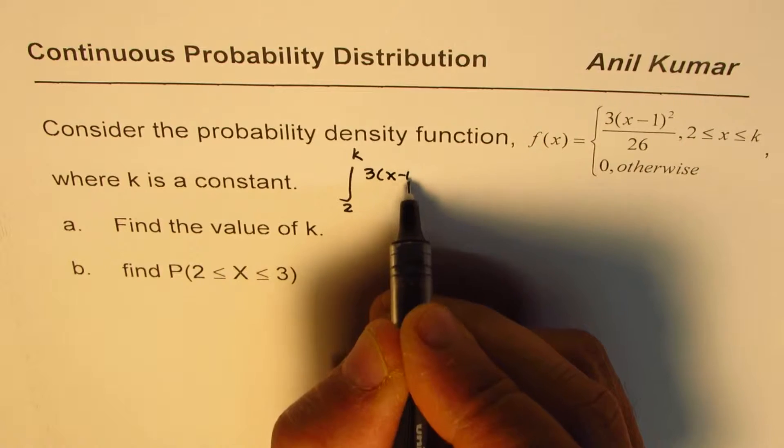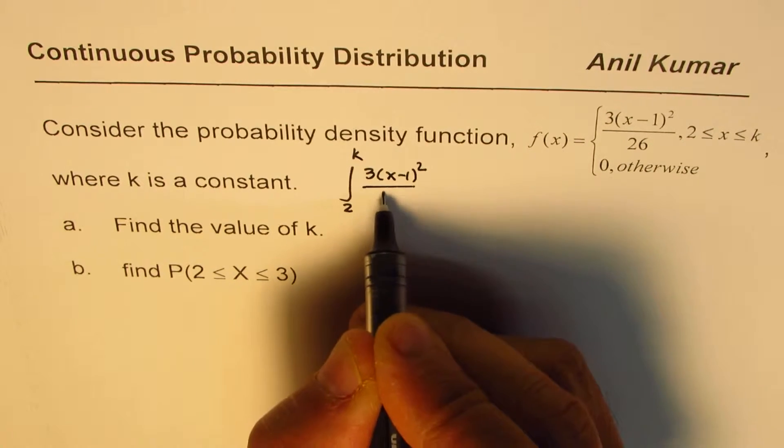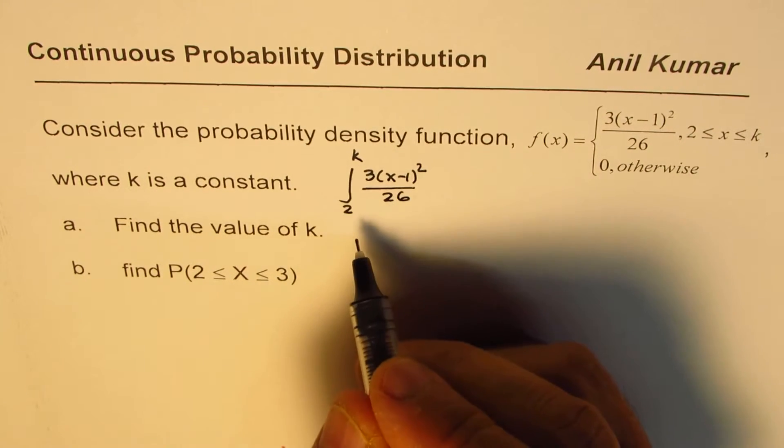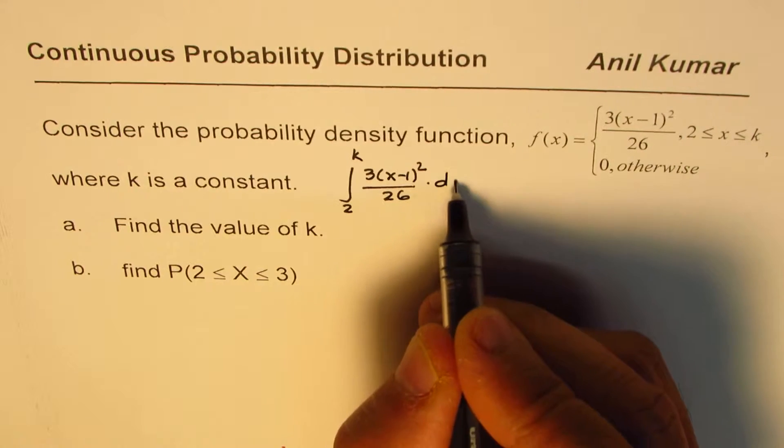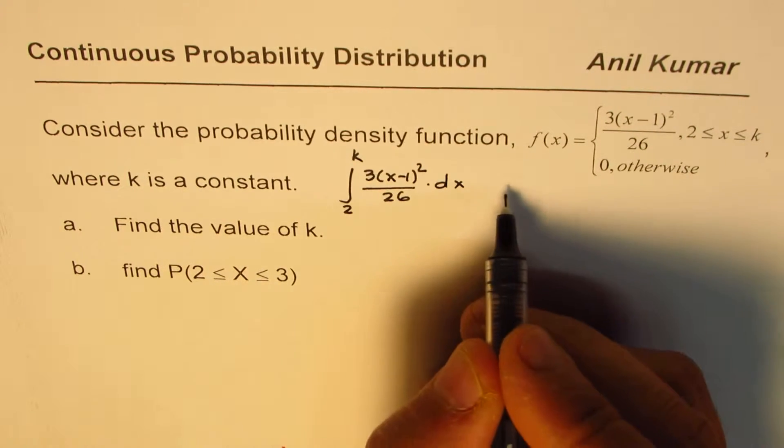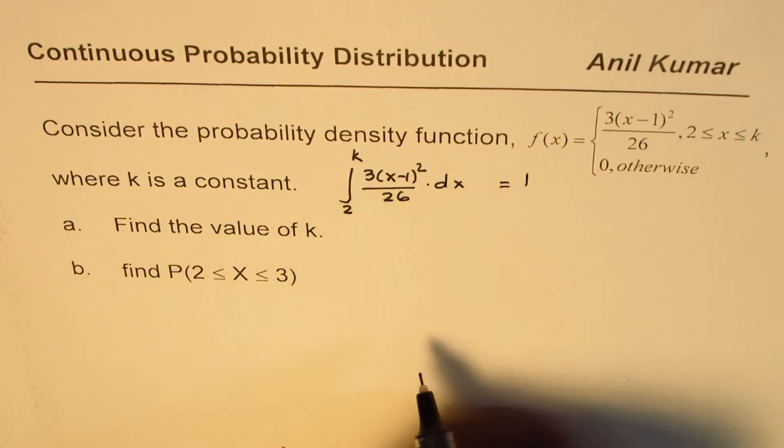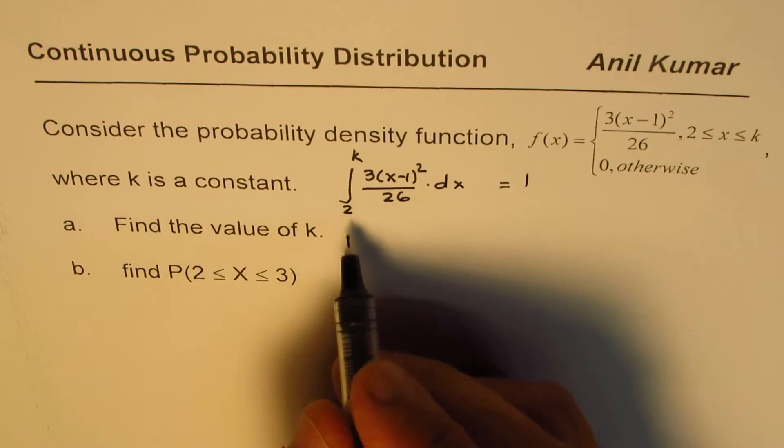That really means that the integral from 2 to k for the given function, which is 3(x-1)² over 26, this integral should be equal to 1. So this integral should be equal to 1. Now, let's integrate it.